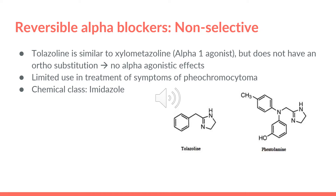For the reversible alpha blockers non-selective, we have two drugs: tolazoline and phentolamine. As we can see in the figure, tolazoline doesn't have an ortho substitution like alpha-1 agonists. Usually for alpha-1 agonists, they have an ortho substitution which can be distinctive from alpha-1 blockers. But here, tolazoline lacks this ortho substitution, so it doesn't have an alpha agonistic effect. They both have a limited use in treatment of symptoms of pheochromocytoma, and their chemical class is imidazole.